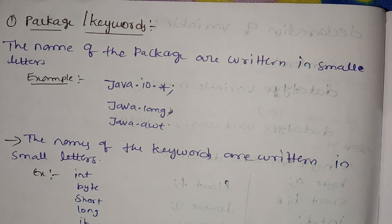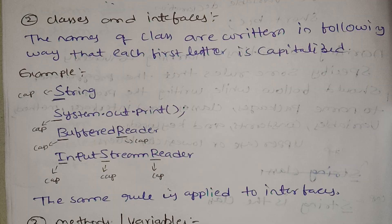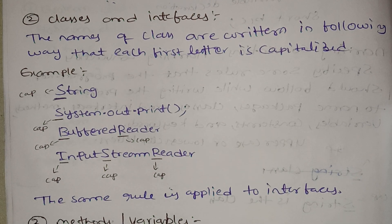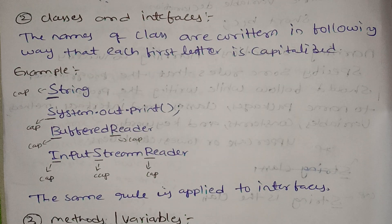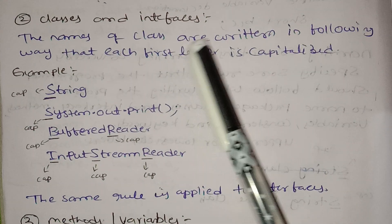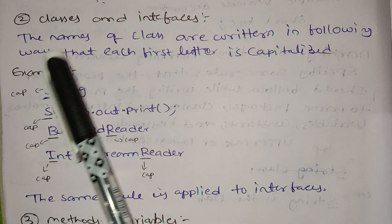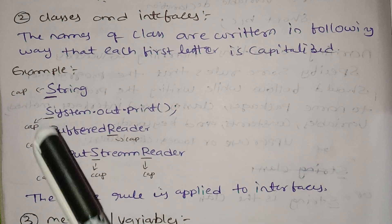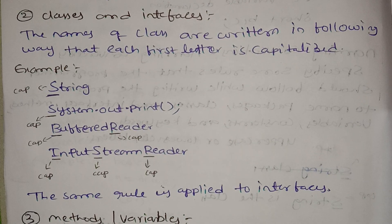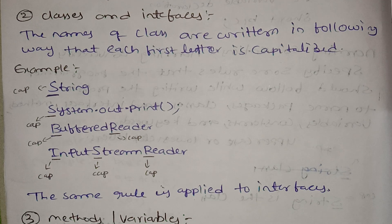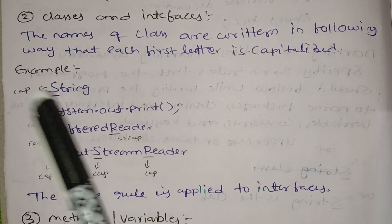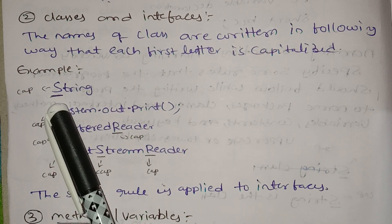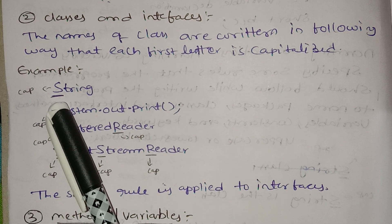Next: classes and interfaces. The name of a class is written such that each first letter is capitalized. If you have a class or an interface, the first letter is capitalized. For example, String — the 'S' in String is capital. As mentioned in the previous video on naming conventions, String uses a capital letter.